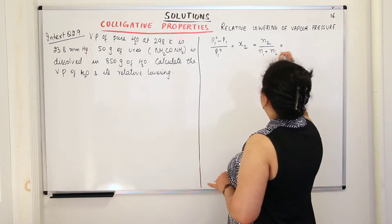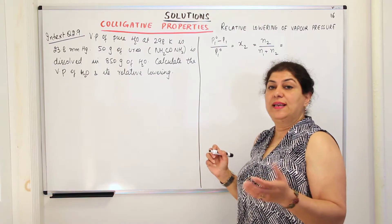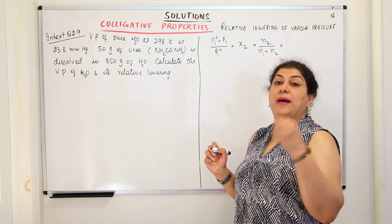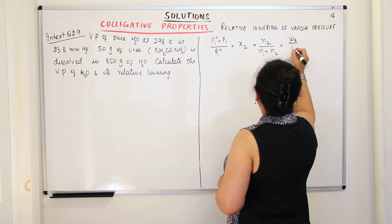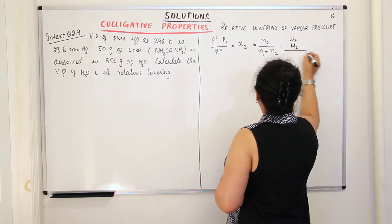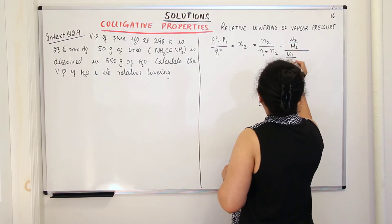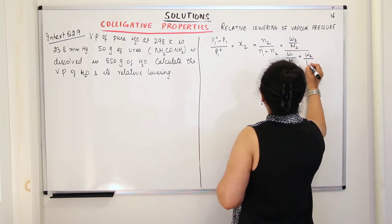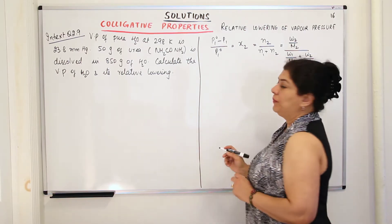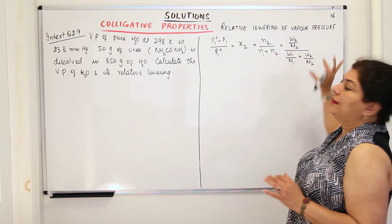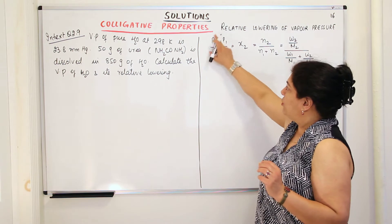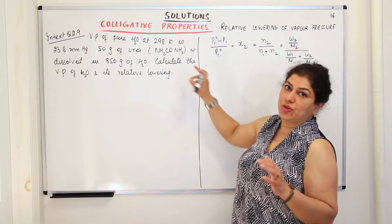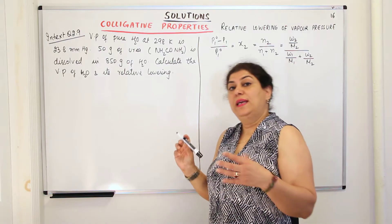The number of moles of anything is its mass divided by its molar mass. So N2 would be mass of 2 divided by molar mass of 2, upon N1 which is mass of 1 divided by molar mass of 1, plus mass of 2 divided by molar mass of 2. This is the formula we will use for relative lowering of vapor pressure, where P1 is the vapor pressure of the solvent in the solution.